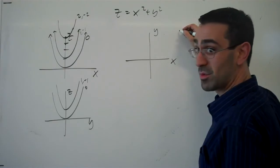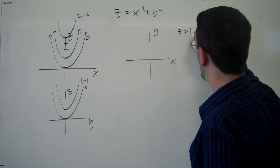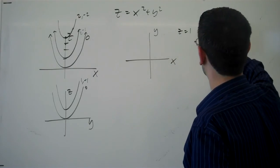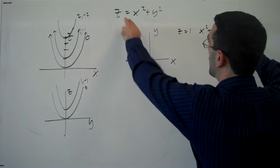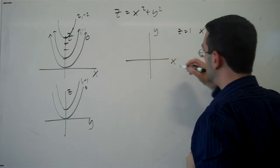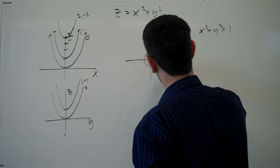So now we'll let z equal a constant. So if z equals 1, we'd have x squared plus y squared equals 1. And this is the equation of a circle.